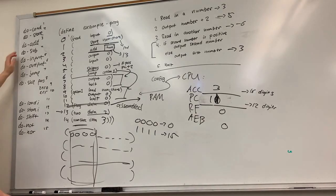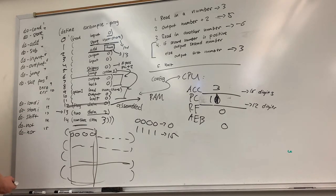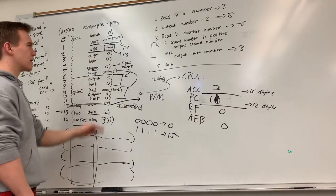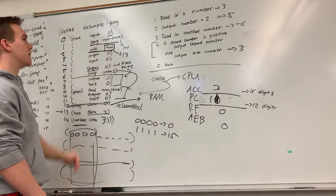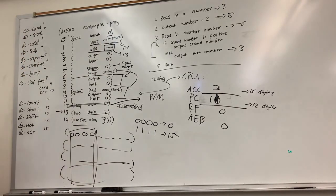Do sub is similar, except you get passed an address, you take the number at that address, and subtract it away from the accumulator. Make sure you're doing your binary math right. Do input and do output don't need an address — I've just passed them zero. Input doesn't need an address; you just read from the user and put it into the accumulator. Output, you just output whatever is in the accumulator.